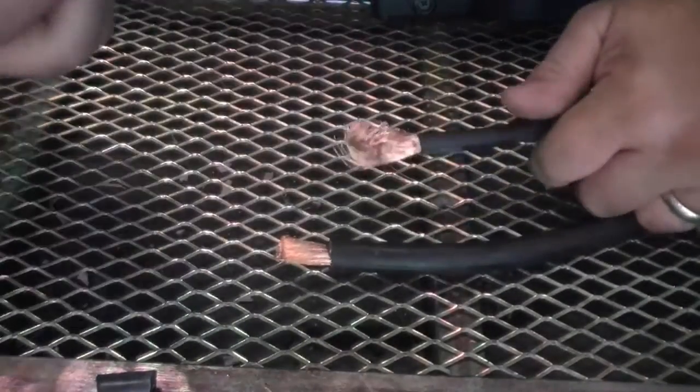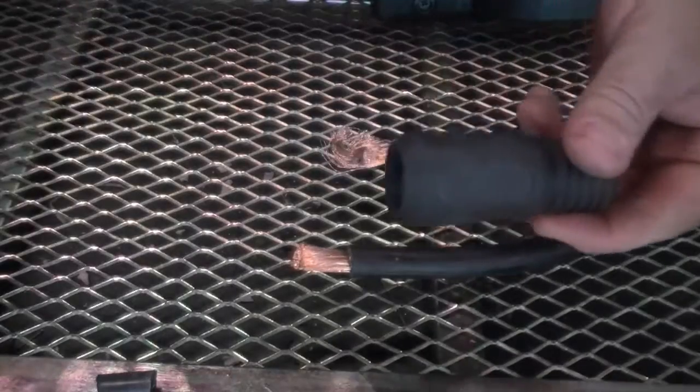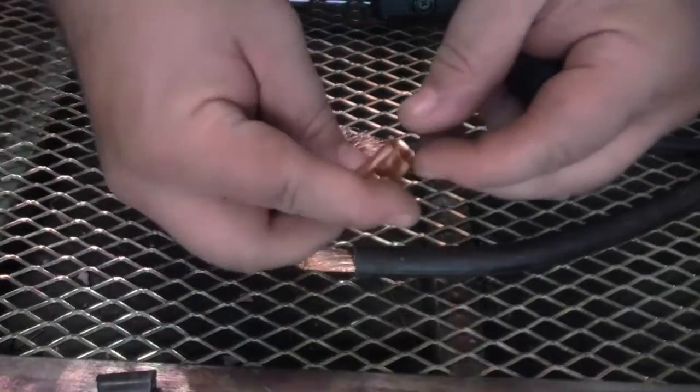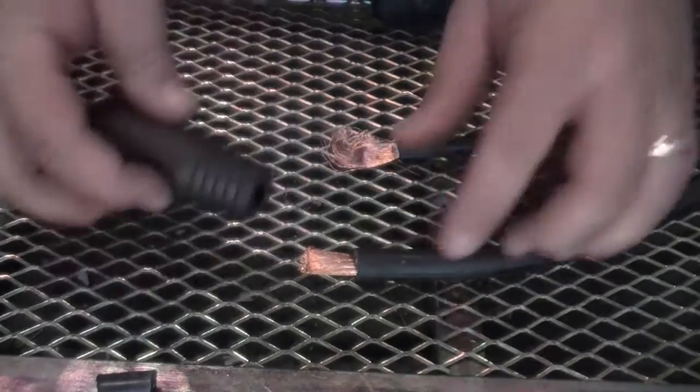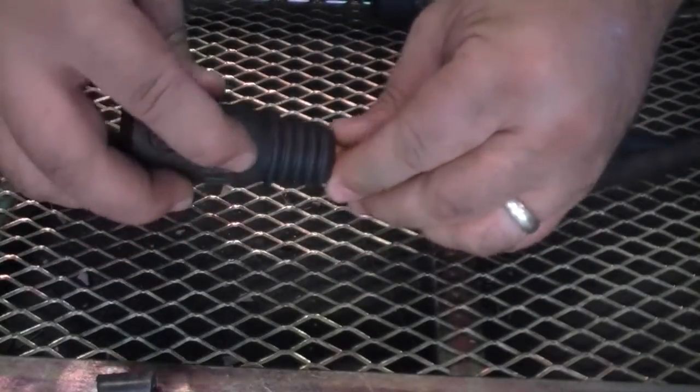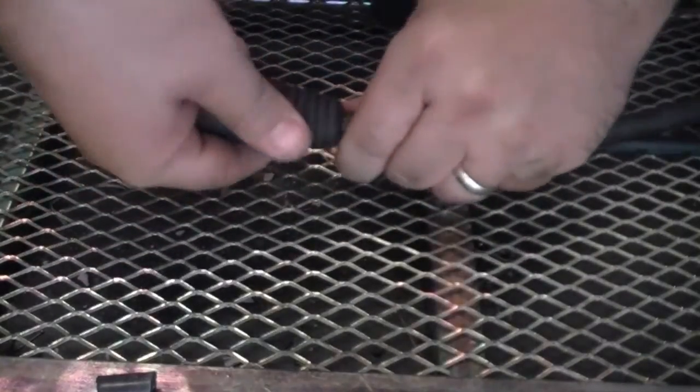Next remove the boot from the old cable. At this time install the new or salvaged shim. On this cable a shim is not necessary due to its large diameter.